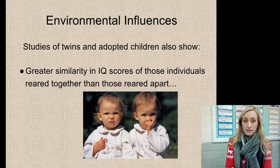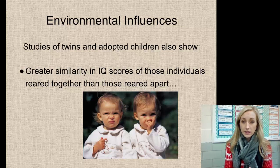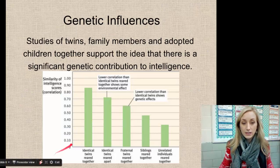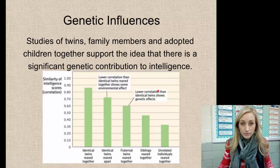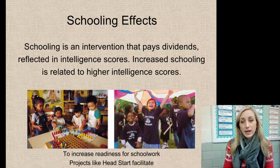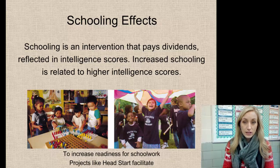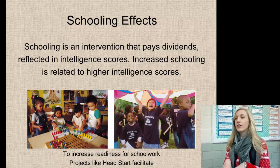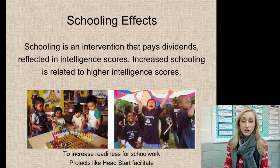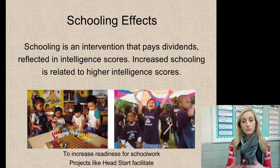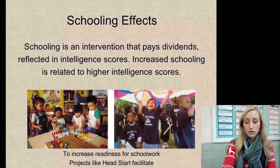Environmental influences also matter. Studies of twins and adopted children show greater similarity in IQ scores among those reared together versus apart. Schooling is an intervention that pays dividends — increased schooling is statistically related to higher intelligence scores, demonstrating an environmental impact. To increase readiness for schoolwork, projects like Head Start facilitate preschool access for those who can't afford it.